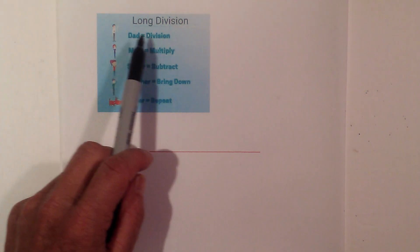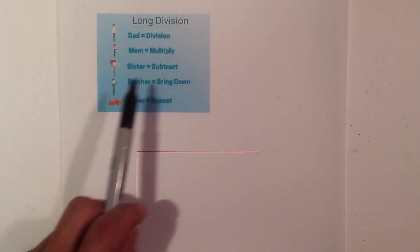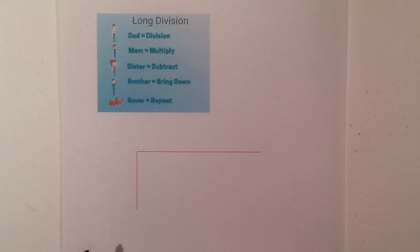So Dad is division, Mom multiply, Sister subtract, Brother bring down, Rover repeat if you have to.